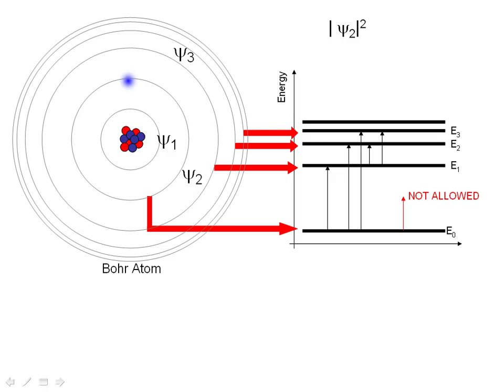Here's our Bohr atom again, and now instead of 1, 2, and 3, we're going to put on psi 1, psi 2, and psi 3 to represent possible states the electron can be in that have some mathematical definition that we haven't quite defined yet.